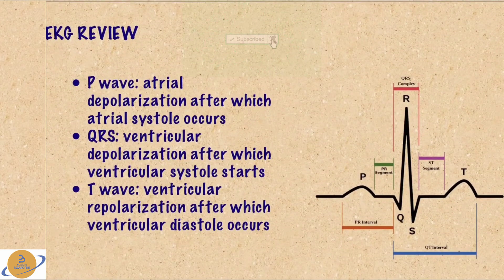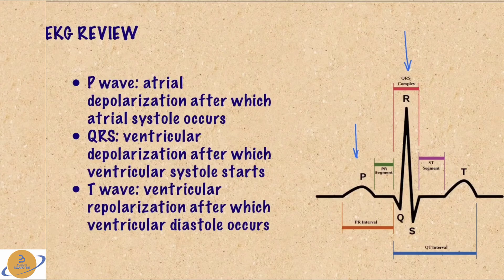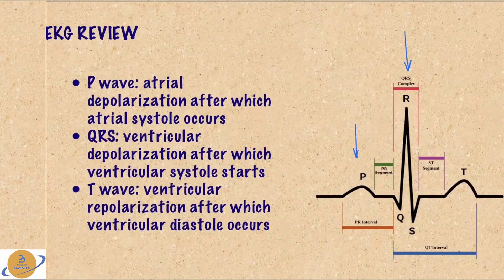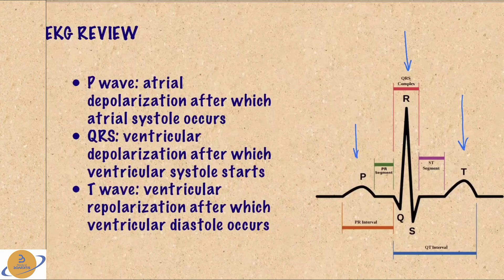For basic EKG review: we have the P wave, which represents atrial depolarization. After the P wave, the atria contract — that's atrial systole. The QRS corresponds to ventricular depolarization; the ventricles get their signals, depolarize, and after that they contract. Ventricular systole starts after the QRS. The T wave represents ventricular repolarization, and after the T wave is when ventricular diastole starts and the ventricles relax.